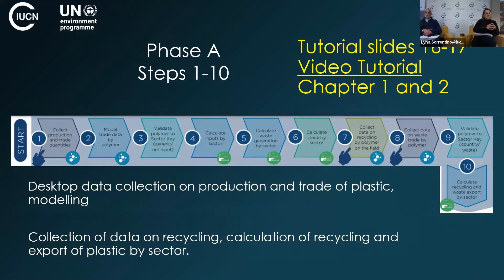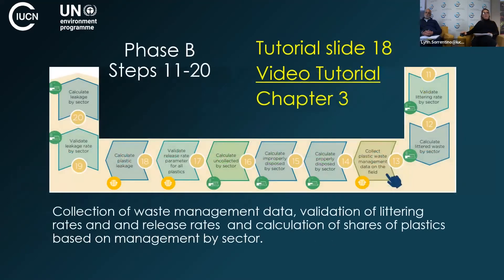Phase A, covered in tutorial slides 16 and 17 and video chapters 1 and 2, involves desktop data collection using Comtrade, BACI, or national databases to find information on collection, production, and trade of plastics for modeling. This also includes collecting recycling data and calculating the export of plastics by sector. As Ran said, this is a step-by-step linear process — the first phase takes 10 steps and leads into Phase B.